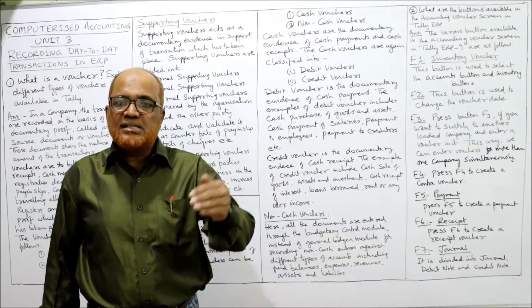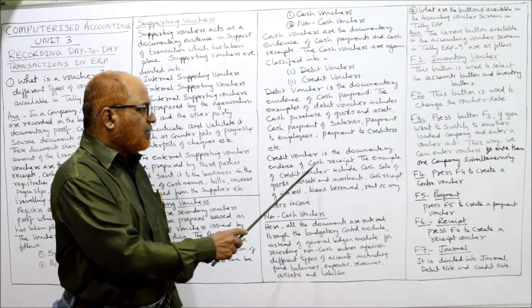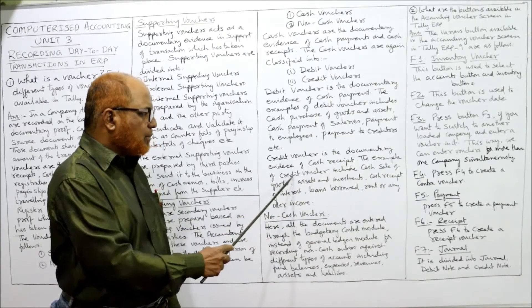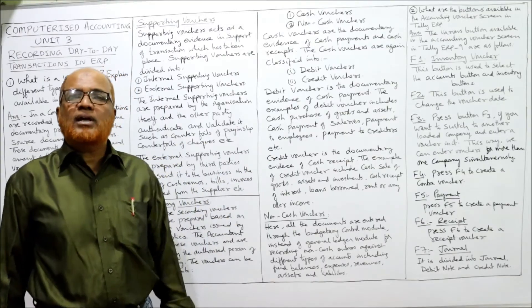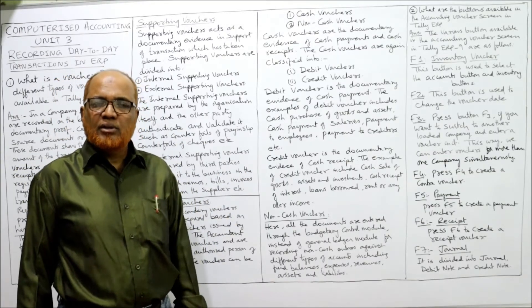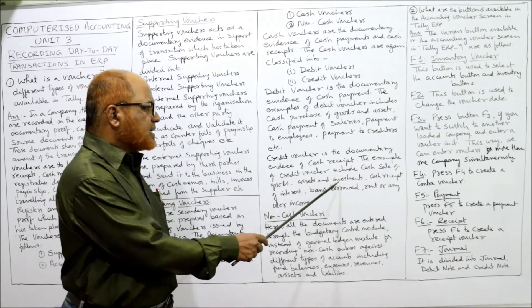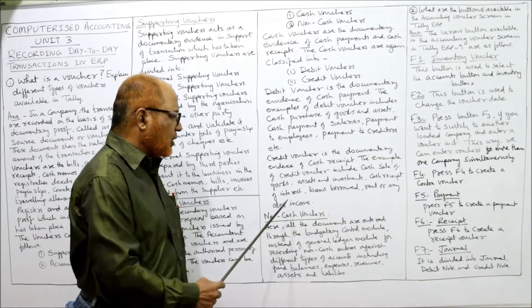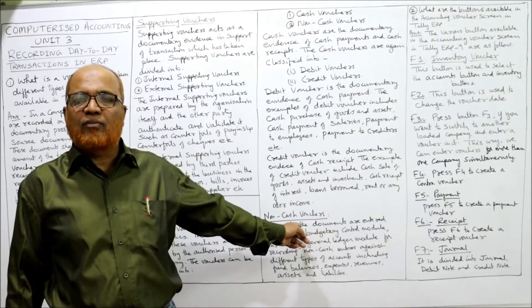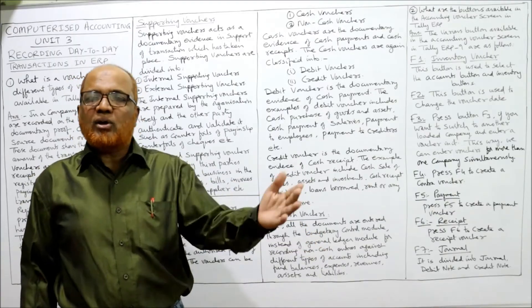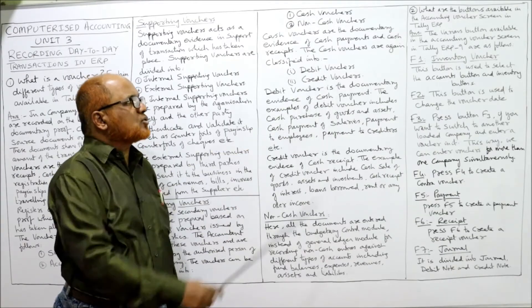Credit vouchers are the opposite — they are documentary evidence for cash receipts. Examples of credit vouchers include cash sales, receipt of interest, loans borrowed, rent received, or any other income. Whenever there is a receipt of cash we prepare a credit voucher, and whenever there is a payment of cash we prepare a debit voucher.